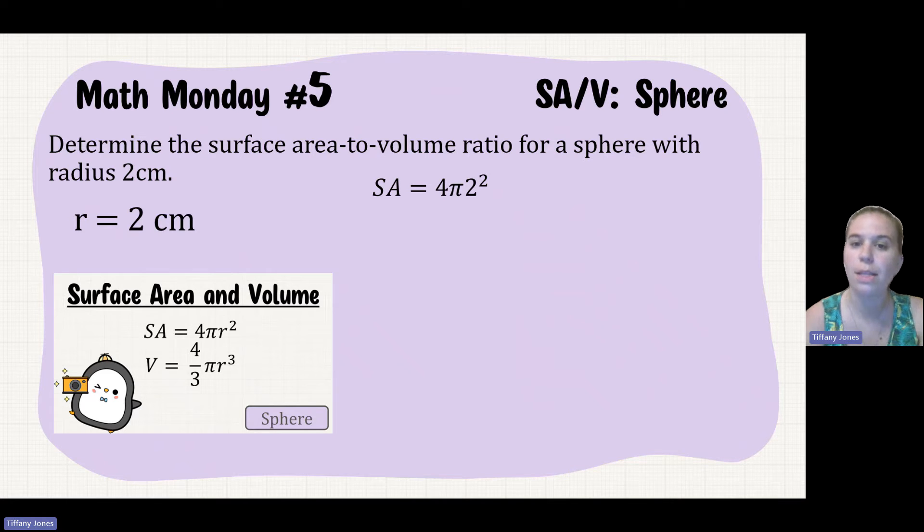So SA is equal to 4 times π times 2 squared, because our radius is 2. So 2 squared is 4, and then 4 times 4 is 16. So I know that my surface area is 16π.